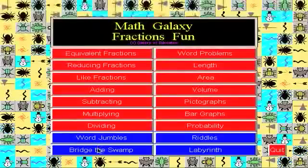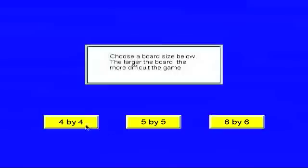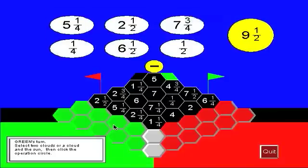And another game is called Bridge the Swamp, where one player, and you have three board sizes, red is trying to build a bridge in this direction, green is trying to build a bridge in this direction, and the first player to complete a bridge and block the other player wins.